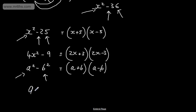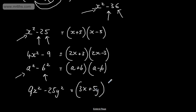Let's look at another one: 9x squared minus 25y squared. 9x squared is a square number, 25y squared is a square number, and we have the difference. So we can write this as 3x plus 5y, and then 3x minus 5y. If you're unsure, expand that out and you'll see you get 9x squared minus 25y squared, as the 15xy terms — one negative and one positive — will cancel out. So all we're doing is spotting the difference of two squares and factoring accordingly.